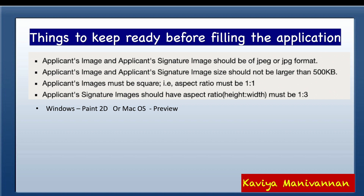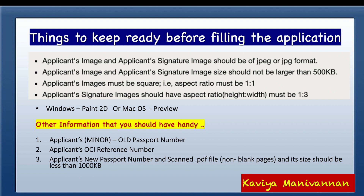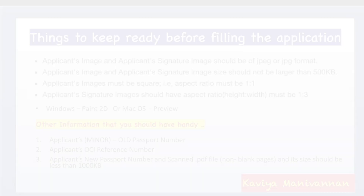In this video, I have shared how to crop an image in Windows Paint 2D or Mac OS Preview software. Other information you should keep handy before filing the application: the applicant's old passport number, new passport number, OCI reference number, and scanned copies of non-blank pages of the applicant's new passport as a PDF file with size less than 1000 KB.